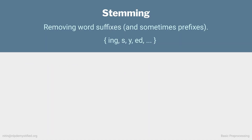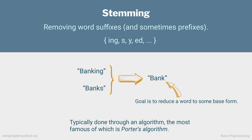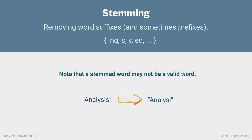The next step we'll cover is stemming. When we strip a word of its suffixes — and depending on language, sometimes its prefixes — what we're left with is the word's stem or base form. So the words banking and banks would share the common stem bank. This is often accomplished through an intricate series of rules refined over time. The most famous of which is the Porter Stemmer, named after computer scientist Martin Porter. Note that the stem may not be a valid word, because stemmers follow hard rules and you'll sometimes end up with stemmed words not found in a dictionary.